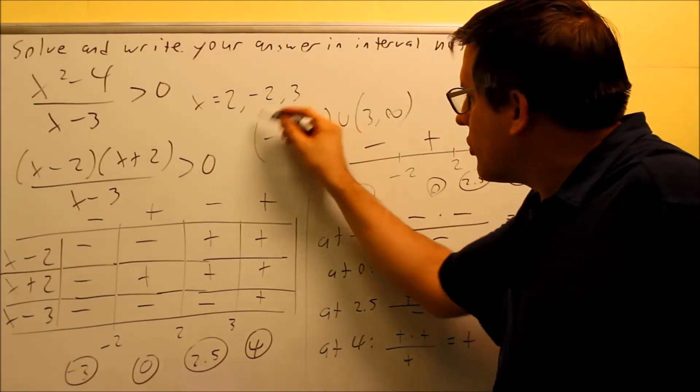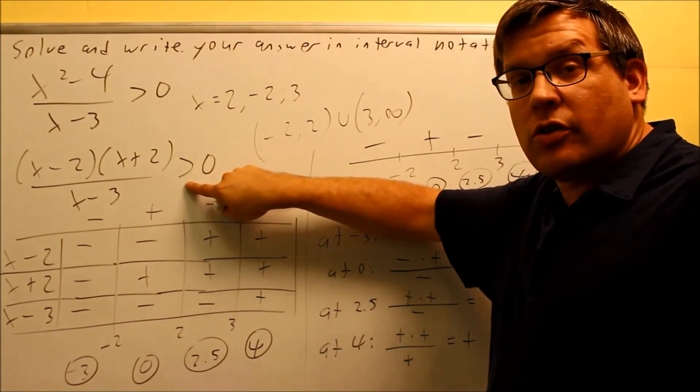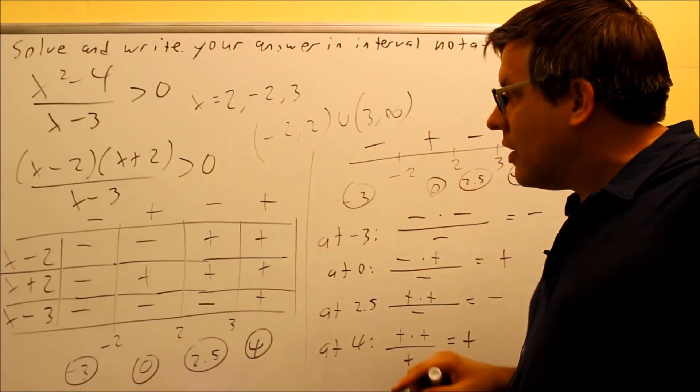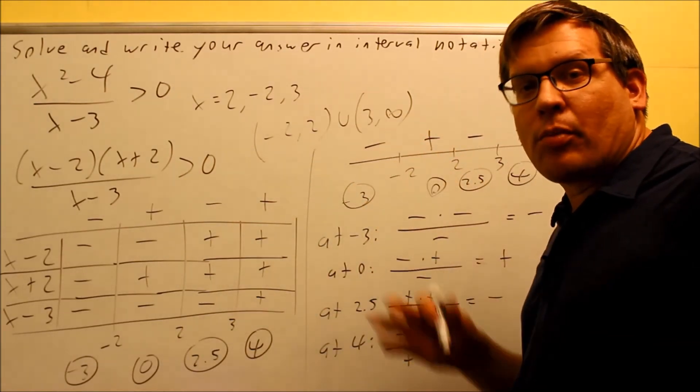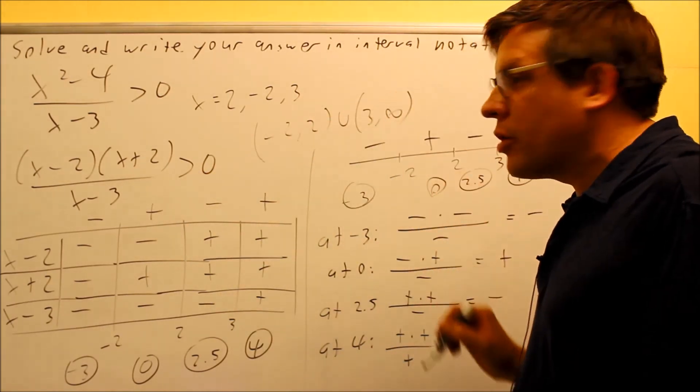Your answer is going to be this. Now we're using parentheses around all these because there wasn't originally an equal sign underneath. And so that's why I have parentheses next to all these. If I had an equal sign, that means that some of these would have to have a bracket next to them. But because I have no equal sign underneath, that's why all of them are going to be parentheses.